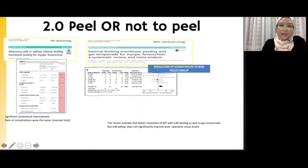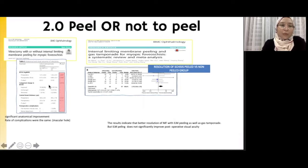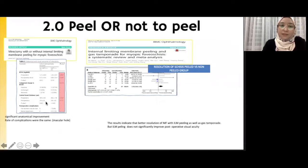Consistently across studies, there was similar benefit in terms of anatomical and functional changes post-surgery between the two groups. Looking at the ILM peel group versus the non-peeling group, the visual gain between those two groups was not significant in terms of p-values. Similarly, when looking at the resolution of central foveal thickness, both groups had very impressive resolution, but the difference was not significant, nor was the post-operative complication rate.